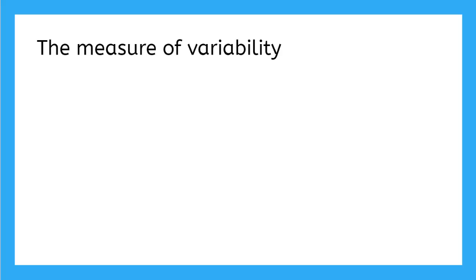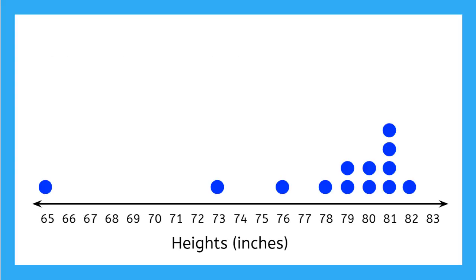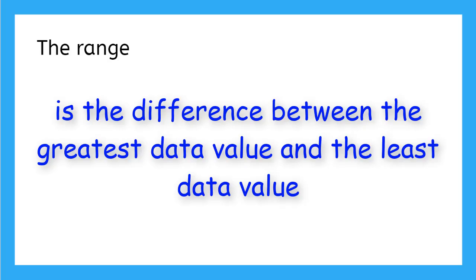Now that we have looked at the measures of center, let's talk about the measure of variability. The measure of variability is a single number to describe the spread of a data set. When we look at dot plots, we think of the spread of data as going from the smallest number to the largest number. But we can calculate a single number to tell us how much spread there really is. The range is a measure of spread. It is the difference between the greatest data value and the least data value.